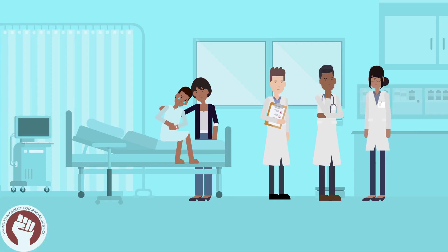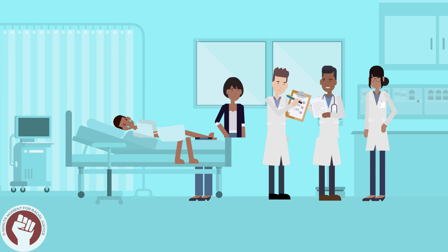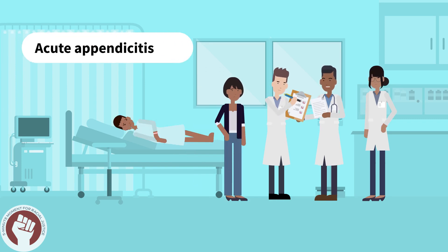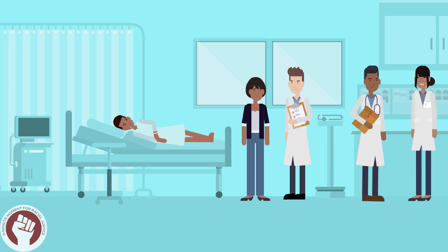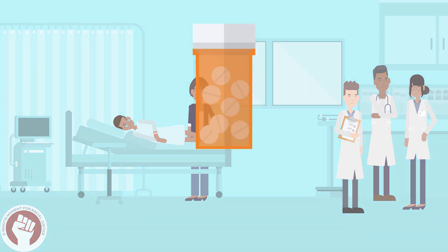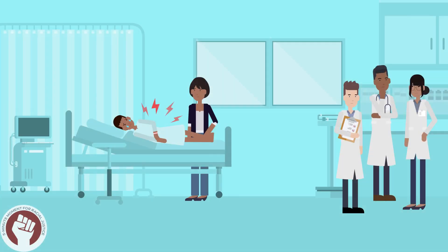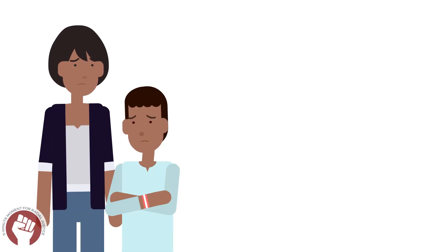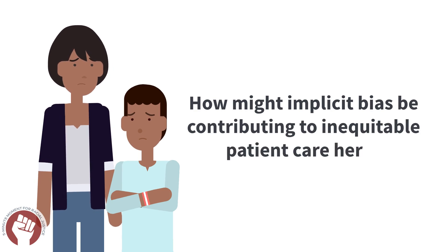An 8-year-old male presents to the emergency room for fever and abdominal pain. He is diagnosed with acute appendicitis. While awaiting surgery, the mother of the child asks the learner physician, can you give anything for his pain? The child is given one dose of acetaminophen and an hour later his pain remains uncontrolled. This is a common scenario — how may implicit bias be contributing to inequitable patient care here?